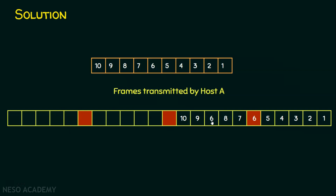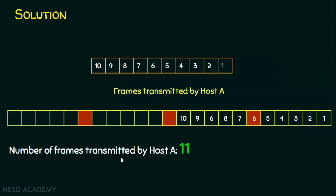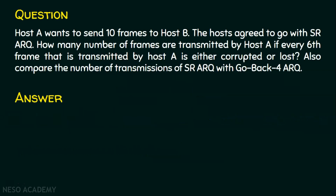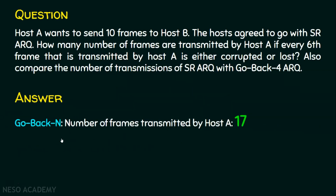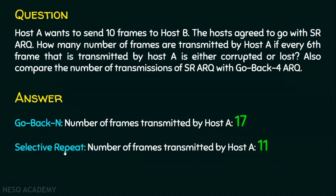Counting the total number of transmissions: 1, 2, 3, 4, 5, 6, 7, 8, 9, 10, 11 — the number of frames transmitted by Host A is 11. Note that the retransmission of frame 6 need not occur at a fixed position; it may happen at different points. The main advantage of Selective Repeat ARQ is that only the lost frames are retransmitted. Comparing both: in Go Back N ARQ, the number of frames transmitted by Host A is 17, and in Selective Repeat ARQ it is 11.